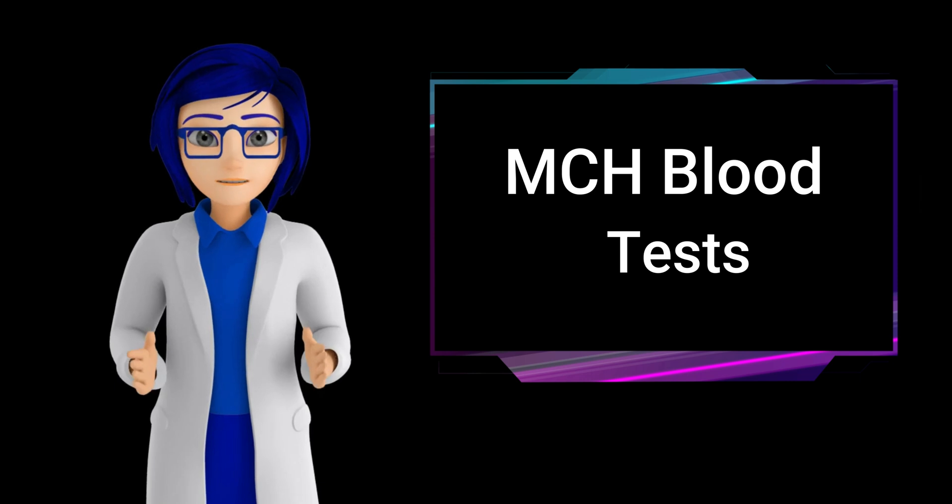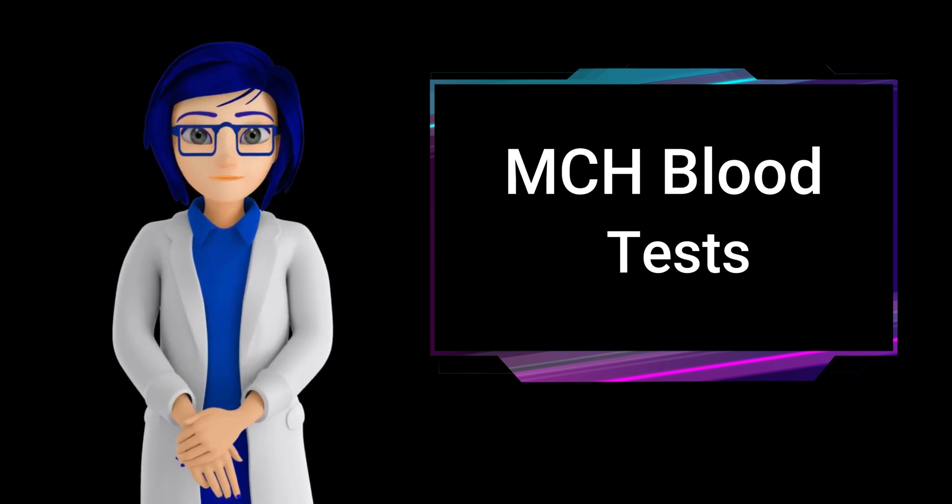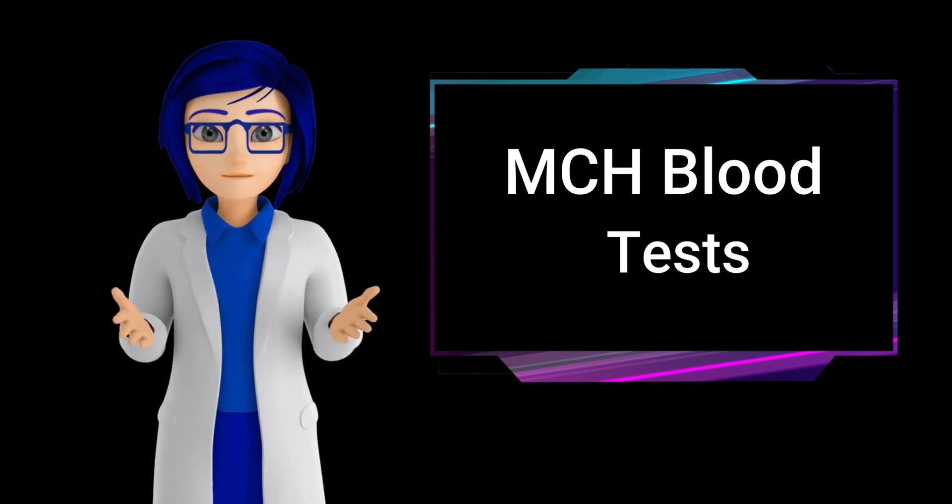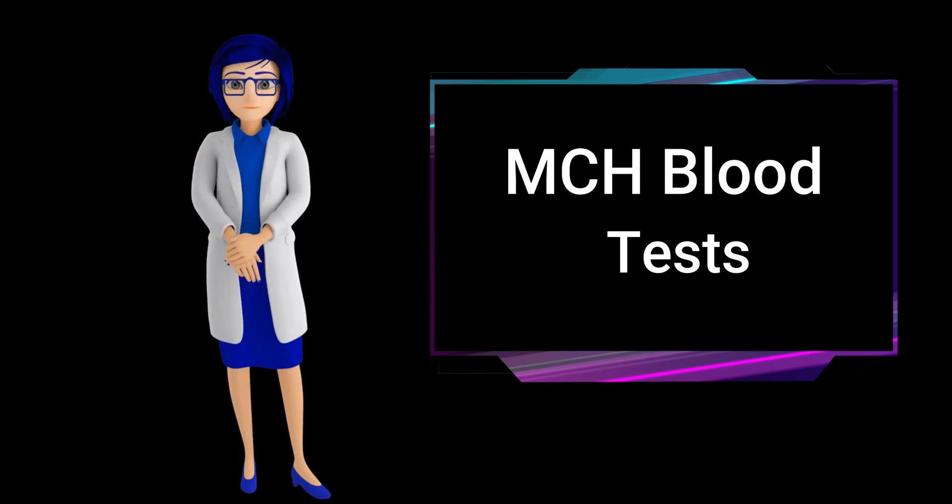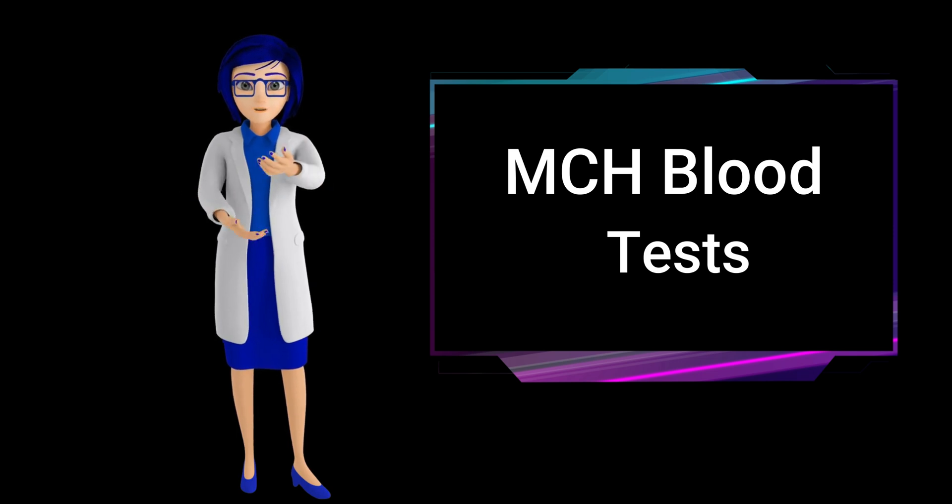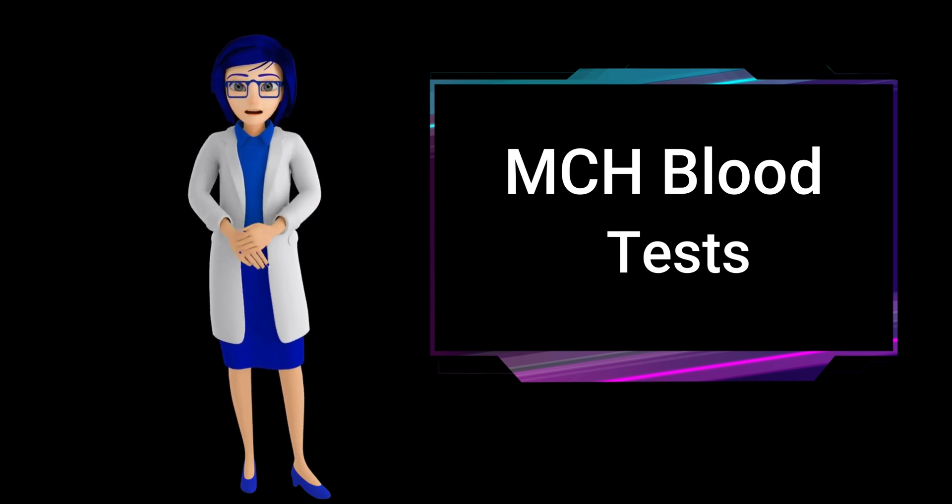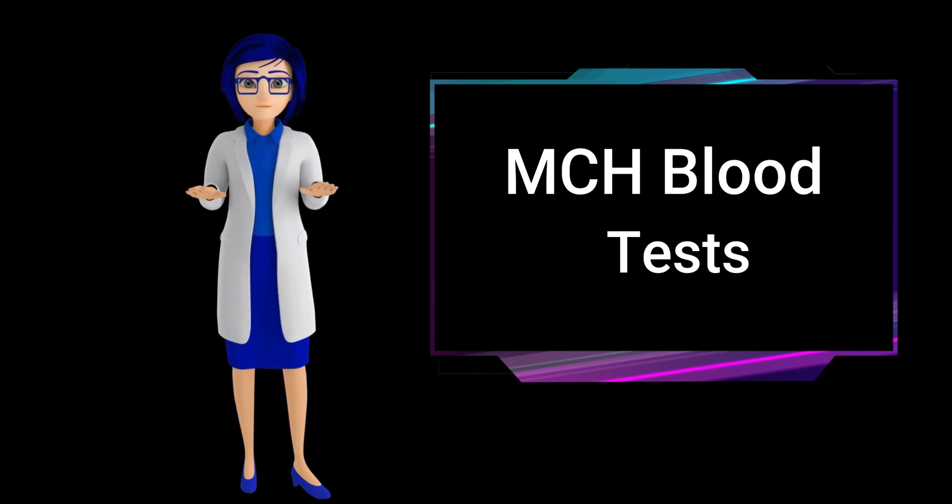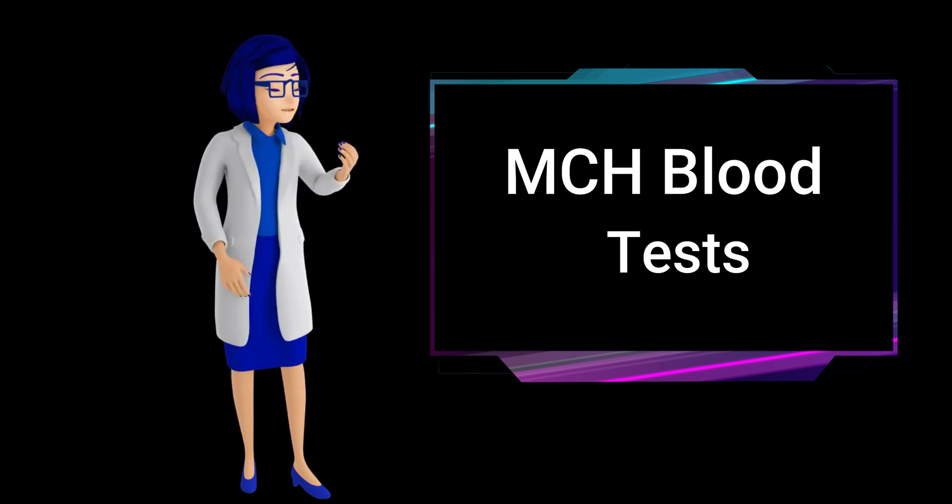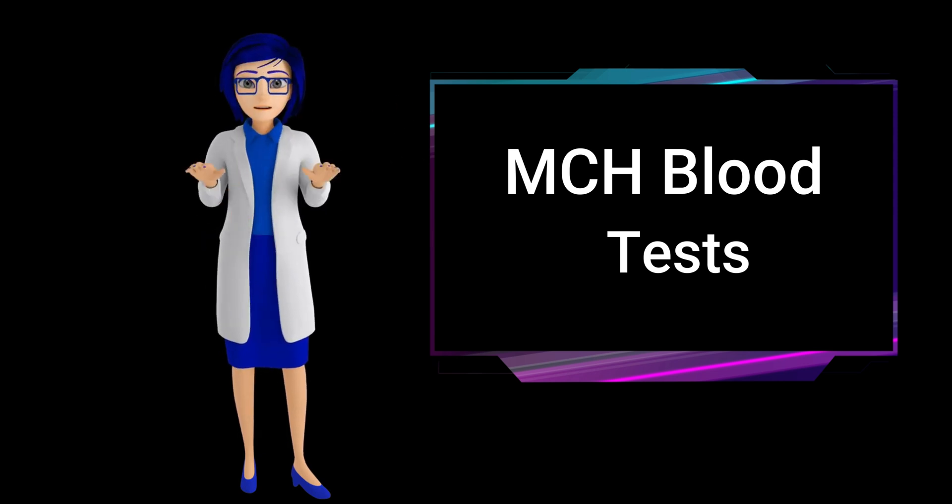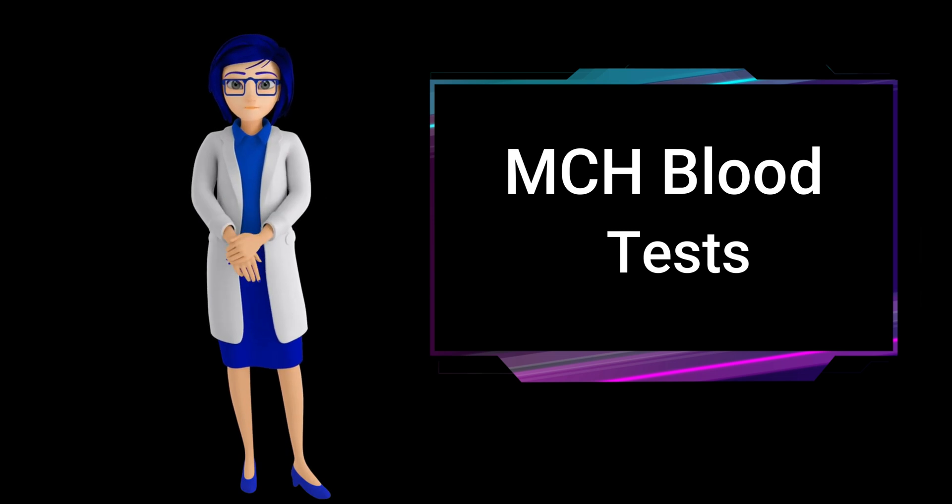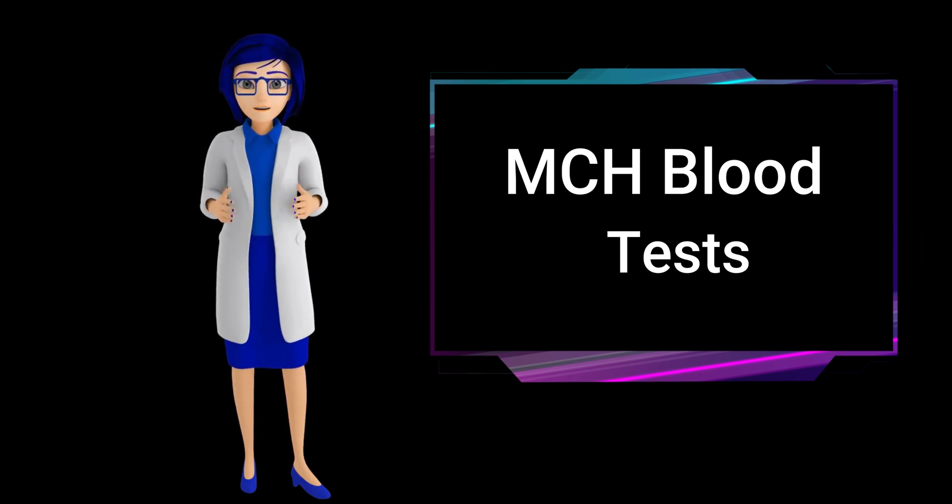Causes of high MCH levels include vitamin B12 deficiency or folate deficiency. Liver disease can interfere with the production of bile, which is necessary for the absorption of vitamin B12. A deficiency in vitamin B12 due to liver disease can lead to megaloblastic anemia and high MCH levels. Alcohol misuse: excessive alcohol consumption can damage the liver and interfere with the absorption of vitamin B12, leading to megaloblastic anemia and high MCH levels.